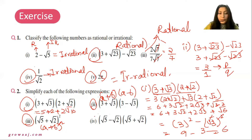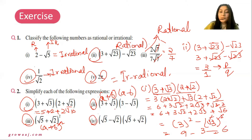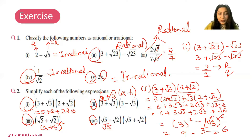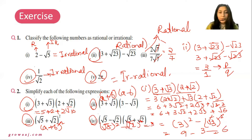Next, question number part 4. This is again in the form A plus B times A minus B. So we write 5 squared minus square root of 2 squared. It will be 5 minus 2 and the answer will be 3.